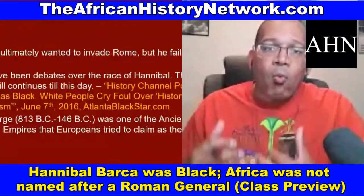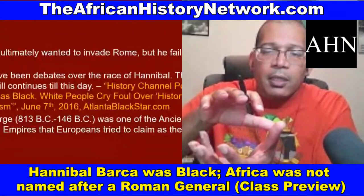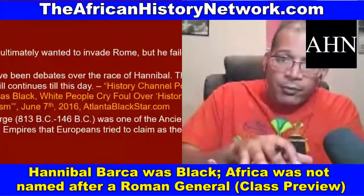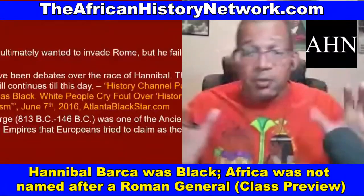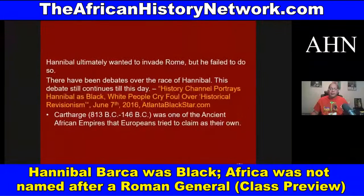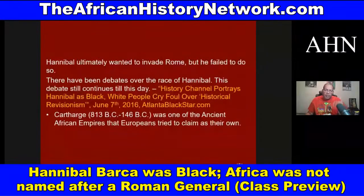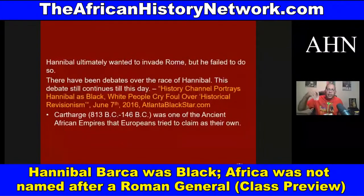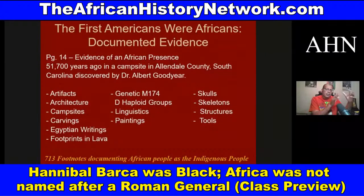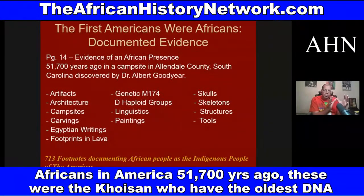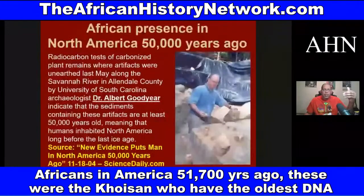As Europeans were exploring and conquering these new lands, setting up plantations like sugarcane plantations and exploiting mineral wealth, they exploited the labor of both indigenous people and African people. African people were already in these areas. When you look at the African presence going back at least 51,700 years ago, we know there were African people in North America — including the land we call the United States — at least 51,000 years ago, specifically in areas we today call South Carolina and Georgia.